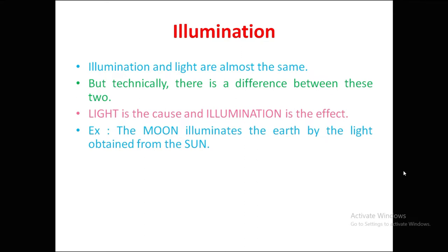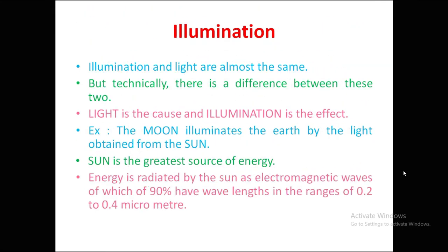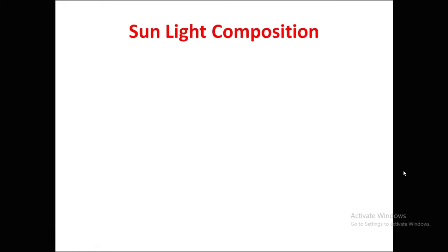The Sun is the greatest source of light energy. Energy is radiated by the Sun as electromagnetic waves, of which 90 percent have wavelengths in the range of 0.2 to 0.4 micrometers. Let us see the sunlight composition and how sunlight is divided into its components.